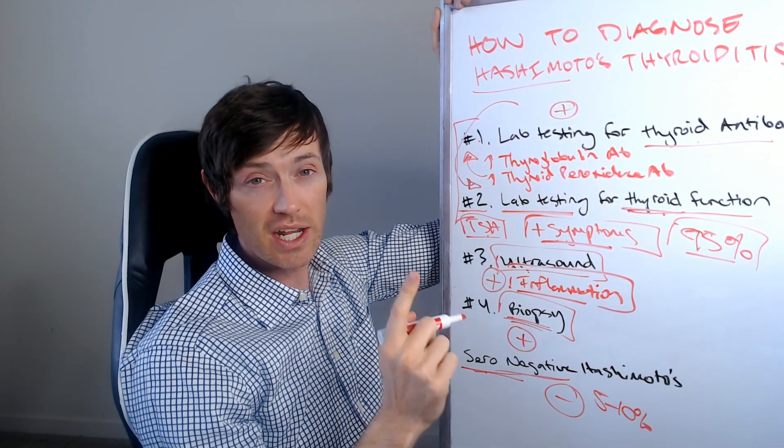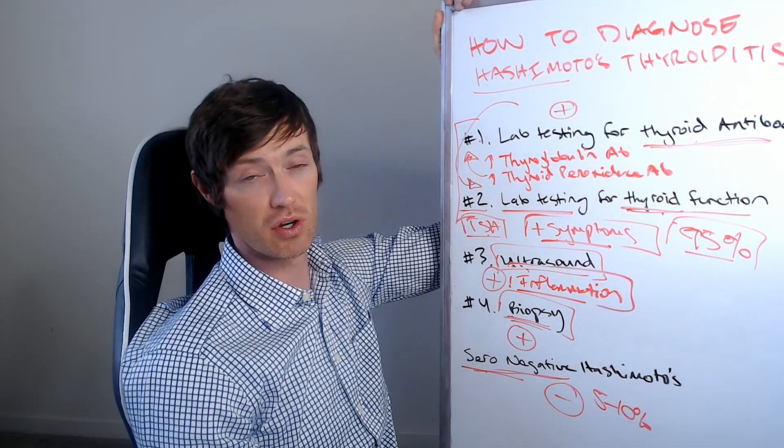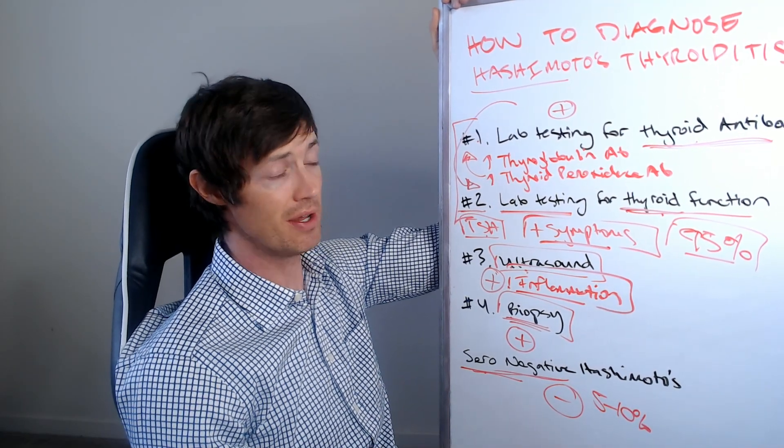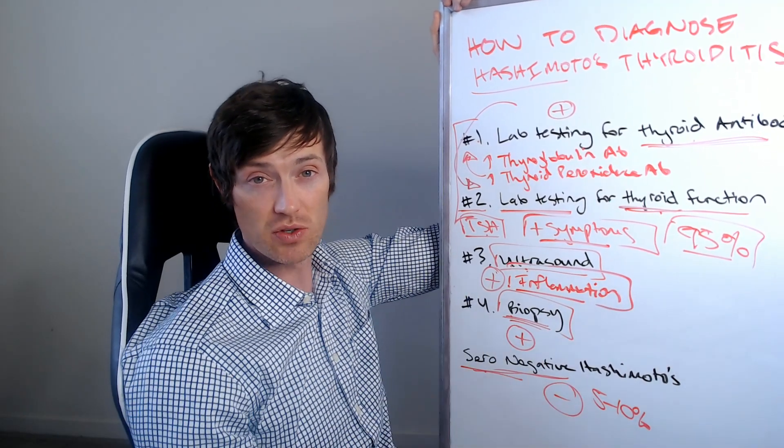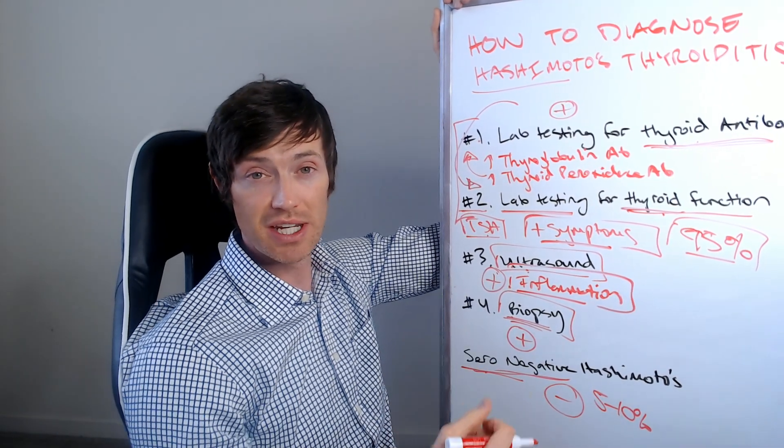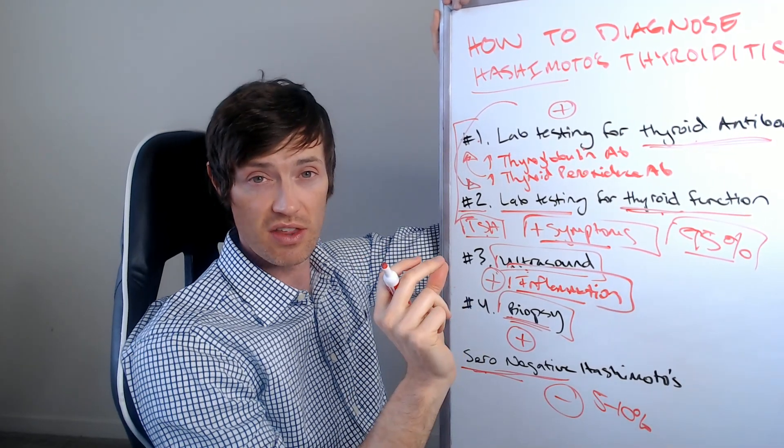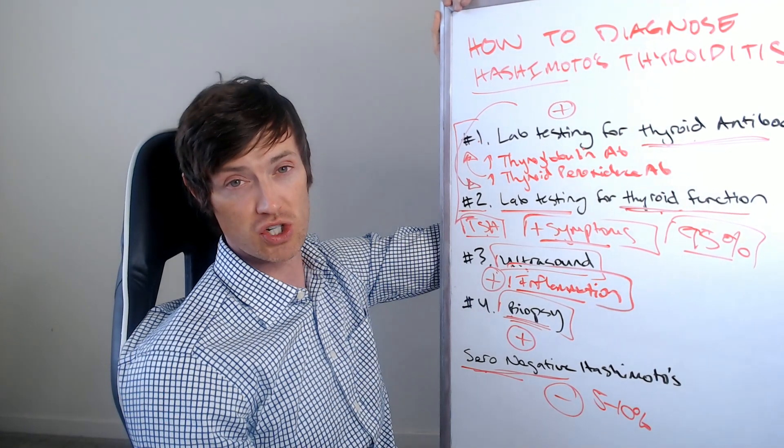But if you are anyone listening to this, you have a thyroid problem. I want you to go out and make sure that you have at least checked for your thyroid antibodies. The reason this is so important for you as a thyroid patient is because if you know that you have thyroid antibodies and you have a diagnosis of Hashimoto's, you can then do something about it. You can actually then, it actually changes your treatment. So instead of just focusing on the thyroid, you will then want to focus on both the thyroid and your immune function at the same time.